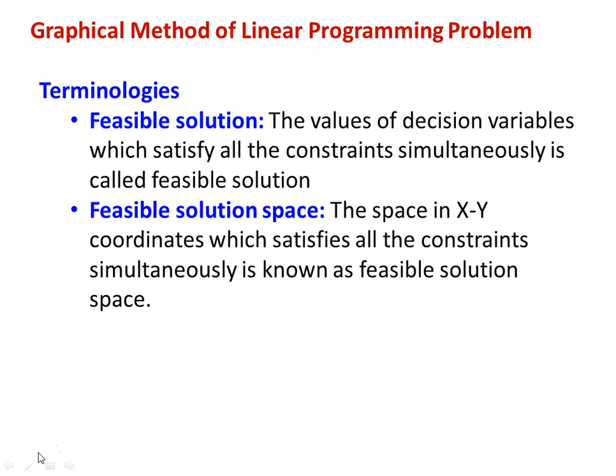What is feasible solution space? In the graphical method, we solve the problem in the XY coordinate. So immediately you can recognize that this is applicable for a linear programming problem wherein you have only two variables, like X1 and X2. The constraints are expressed as equations, and we have to plot the equations in the XY plane. We will get a space which will satisfy all the constraints simultaneously — that space in the XY coordinate which satisfies all the constraints simultaneously is called the feasible solution space.